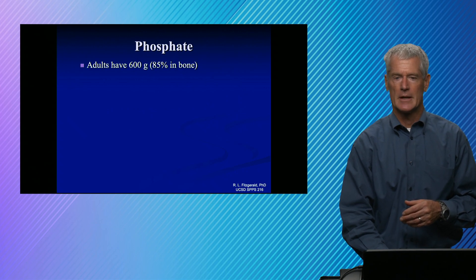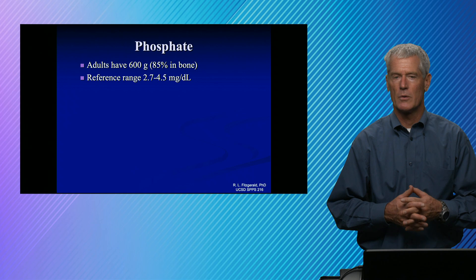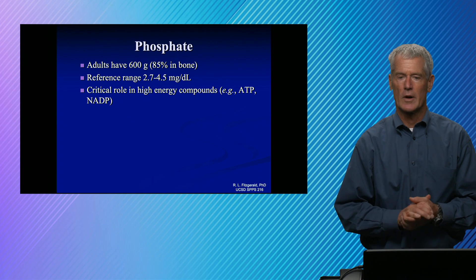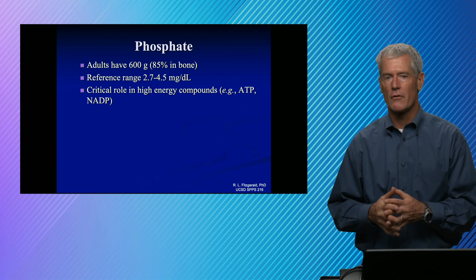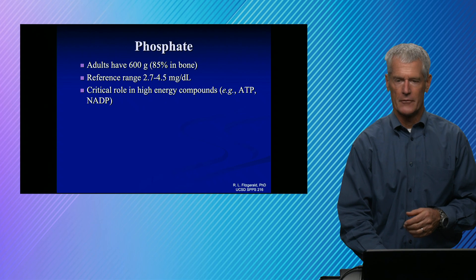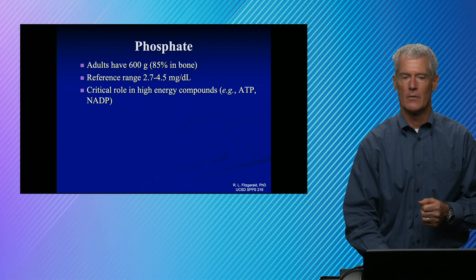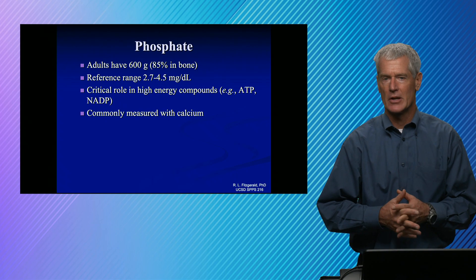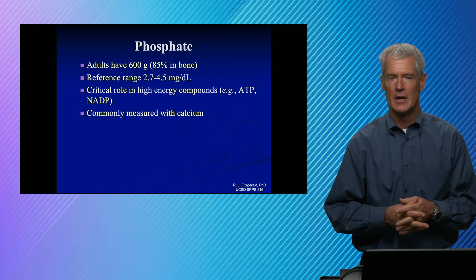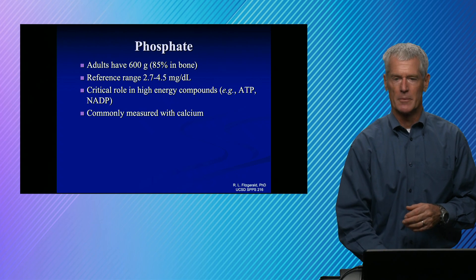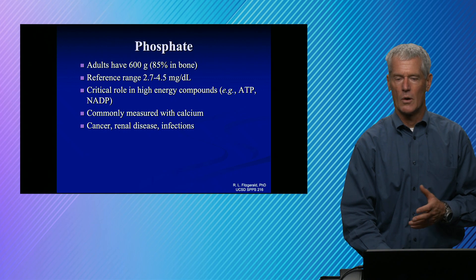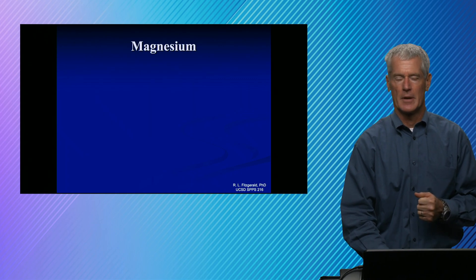Phosphate, similar to calcium, is mostly stored in bones. It has a fairly narrow reference range of about 2.5 to 4.5. It's used in a variety of high-energy compounds, phosphorylations, and to activate various intracellular second messengers. Oftentimes it's measured with calcium, particularly in renal disease — in end-stage renal disease, the calcium-phosphate product is really important to have under control. Phosphate is also clinically relevant in cancer, renal disease, and infections.